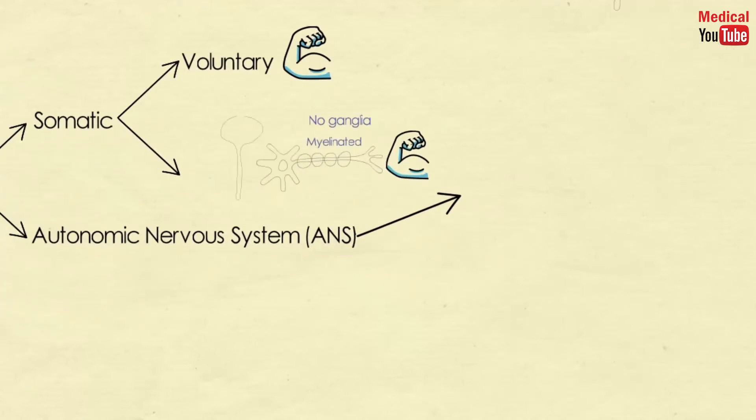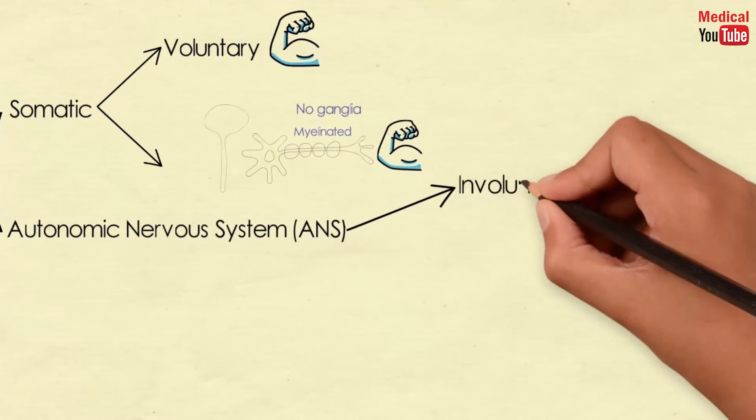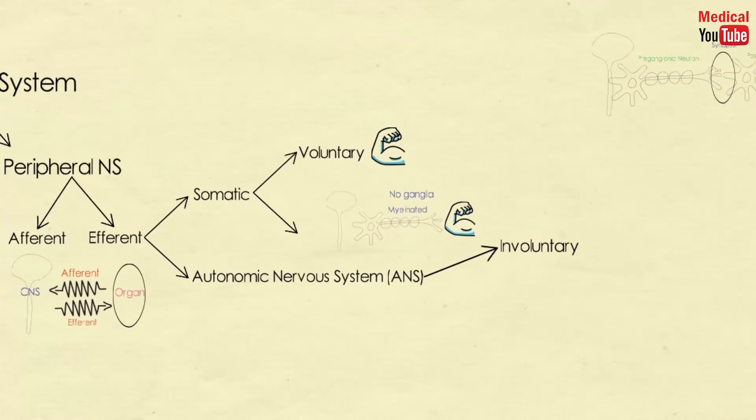The second division of the efferent portion of the peripheral nervous system is the autonomic nervous system or ANS. It is responsible for all the involuntary functions that occur unconsciously.